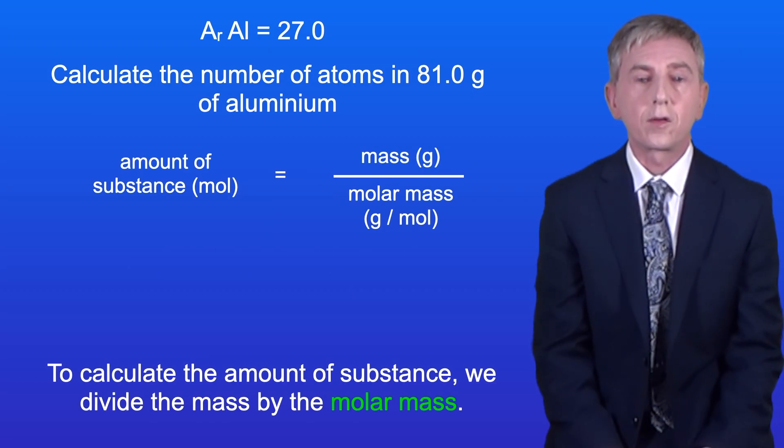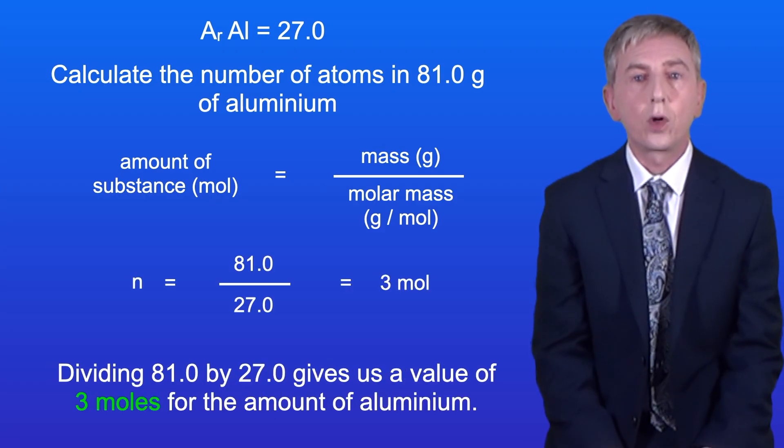To calculate the amount of substance we divide the mass by the molar mass. Dividing 81.0 by 27.0 gives us a value of 3 moles for the amount of aluminium.